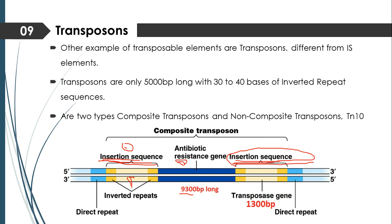The transposase enzyme helps the composite transposons in transposition. The central region of the insertion sequences codes for the transposase enzyme, and this transposase enzyme facilitates the transposition of the composite transposons — transferring them from one location to another. So the function of the transposase enzyme in composite transposons is to carry out their transposition.